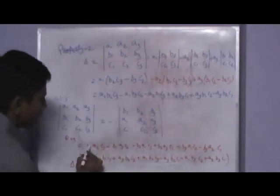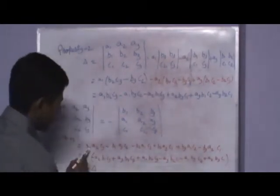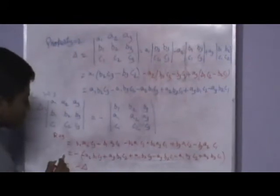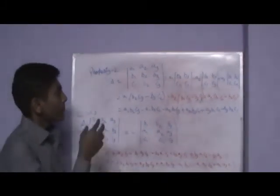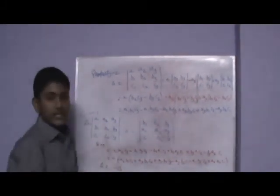I will repeat. If you expand this, you will get this answer. Then you take minus common out, and you will get delta. Hence we prove that delta is equal to minus delta. If you alter the row or column in the determinant, it is not changed in value, only in sign. Hence we have proved that delta is equal to minus delta. Thank you.